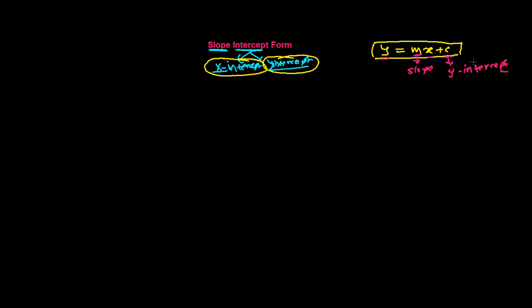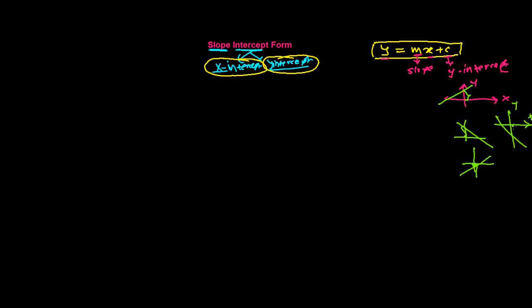The y-intercept means, if we have the x and y axes, the y-intercept is where our line cuts the y-axis. It may cut the y-axis above the origin, below the origin, or at different positions. This distance along the y-axis is our y-intercept.